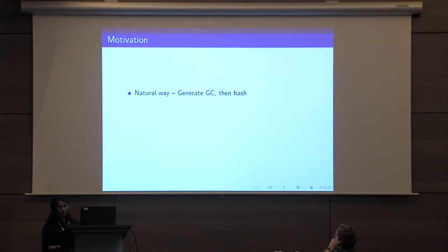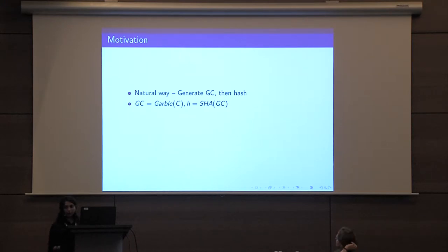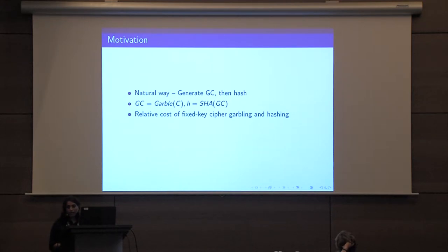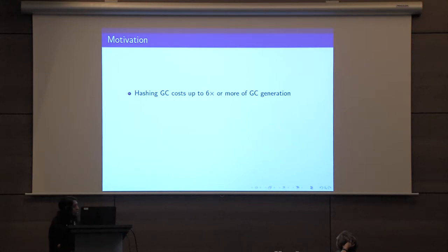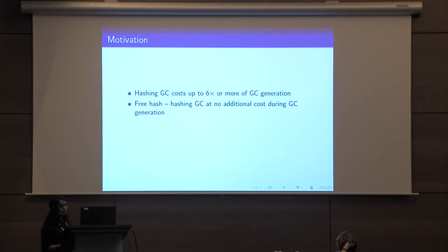A natural way to hash a garbled circuit is to first generate the garbled circuit and then use a hash function like SHA on the garbled circuit string. But when we look at the relative cost of fixed-key cipher garbling and hashing, the cost could vary depending on the architecture, but with fast hardware AES implementations garbling is fast and oftentimes SHA is the bottleneck. On typical computing platforms of today, hashing a garbled circuit could cost up to six times more than generating a garbled circuit. So in this work we study free hashing, which allows for hashing a garbled circuit at no additional cost during the generation of the GC itself.